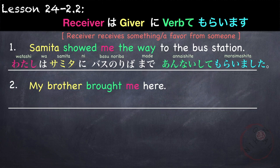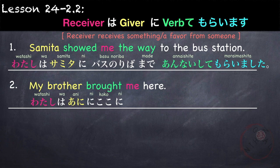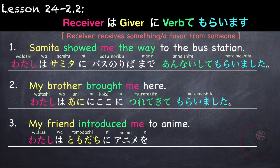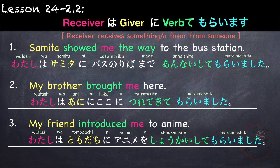Another example: My brother brought me here — watashi wa, ani ni, koko ni, tsurete kite moraimashita. My friend introduced me to anime — watashi wa, tomodachi ni, anime wo, shoukai shite moraimashita.